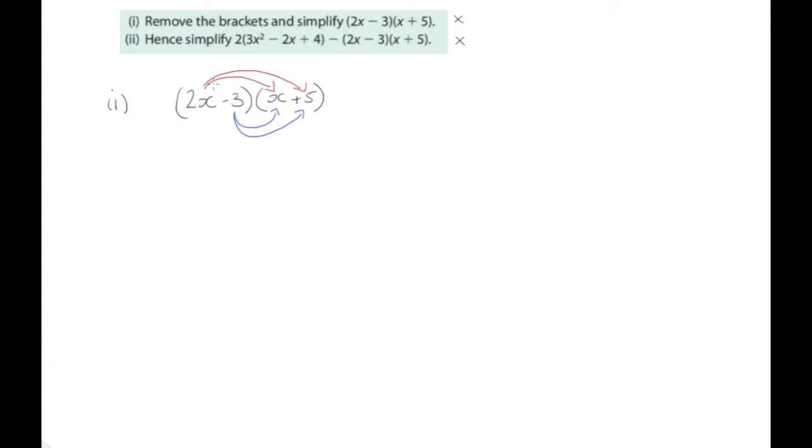So the first one, we'll do 2x multiplied by x. 2x multiplied by x is 2x squared because there is no number in front of the x, well there's no number but that's the same as saying 1, so 2 multiplied by 1 is 2, but when you have x multiplied by x you get x squared. So 2x multiplied by x is 2x squared. And then 2x multiplied by plus 5, the 5 will affect the 2, so 2 multiplied by 5 is 10x.